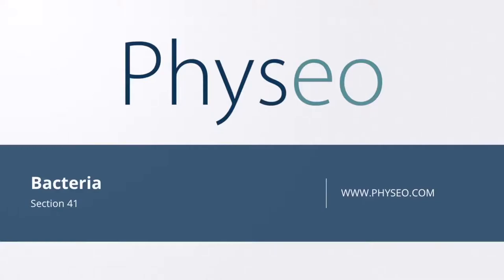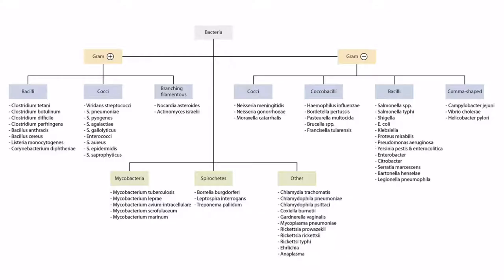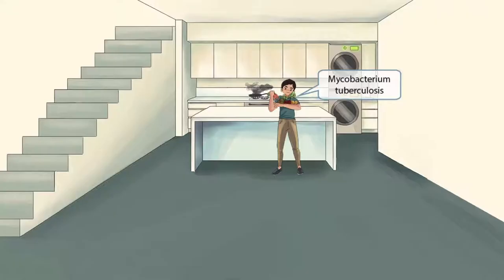Welcome to section 41 of Bacteria. This is our bacteria overview figure, and in this video we'll be discussing Mycobacterium tuberculosis, or simply TB. This scene takes place inside a home as a guy begins to prepare dinner. He's holding a bunch of tubers — tuber sounds like tuberculosis — so the guy holding the tubers will be our symbol for Mycobacterium tuberculosis.